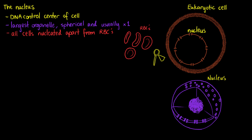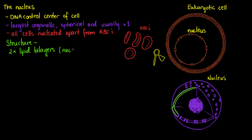Now that we know what types of cells do and do not have a nucleus, we can talk about the actual structure of our nucleus and what it's going to be doing within the cell. The first thing unique to our nucleus is that it has two lipid bilayers. Our actual cell itself only has one lipid bilayer, but our nucleus has two of them, and this is for a specific purpose. We'll call the double phospholipid bilayer of our nucleus the nuclear envelope.